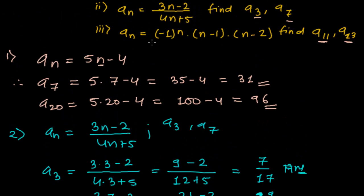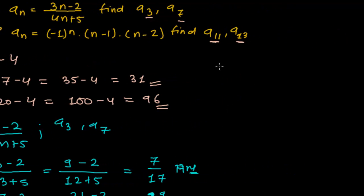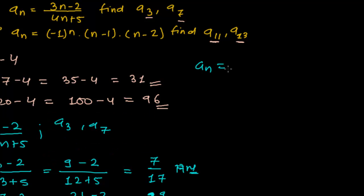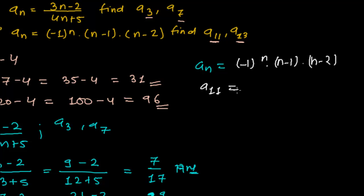The last one: an = (-1)^n × (n-1) × (n-2). We need to find a11 and a13. As I explained in a previous video, if the power of (-1) is even the result is positive 1, and if the power is odd the result is negative 1.